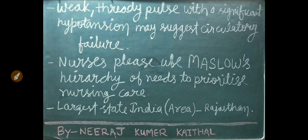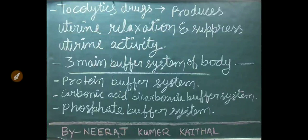Nurses should use Maslow's hierarchy of needs to prioritize nursing care. Largest state of India according to area is Rajasthan. Tocolytic drugs produce uterine relaxation and suppress uterine activity.